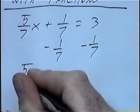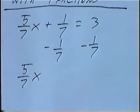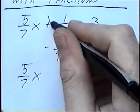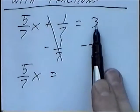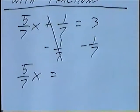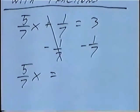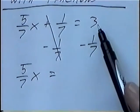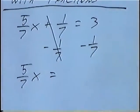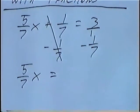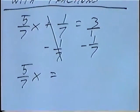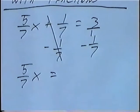5 over 7x would stay the same. Plus 1 over 7 minus 1 over 7 would cancel. And we have the expression 3 minus 1 over 7. To subtract numbers with fractions, we can first make all numbers fractions. 3 we can make a fraction by putting 1 for the denominator, so we have 3 over 1 minus 1 over 7.